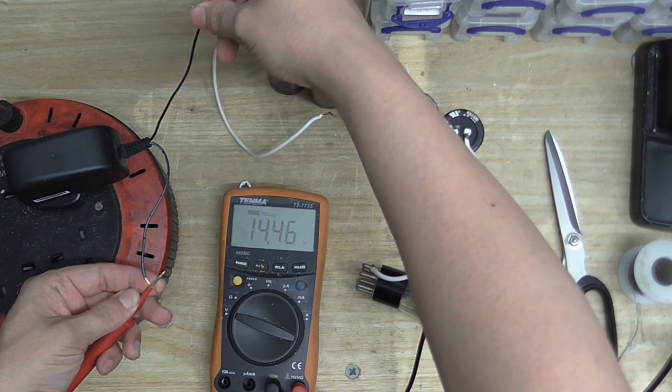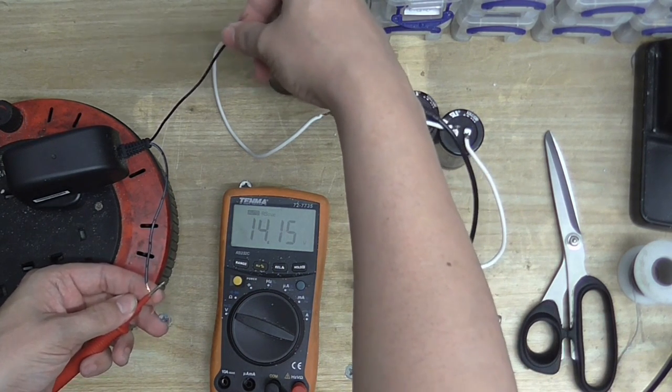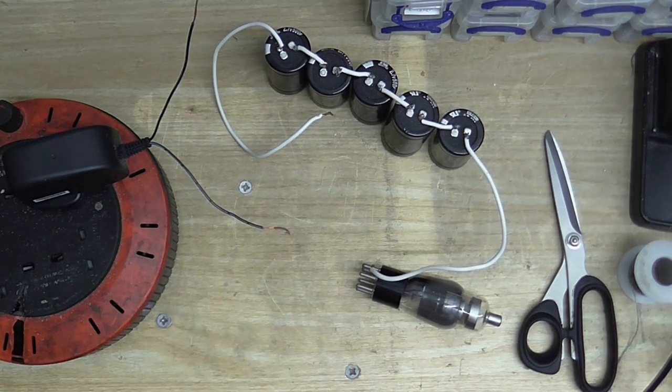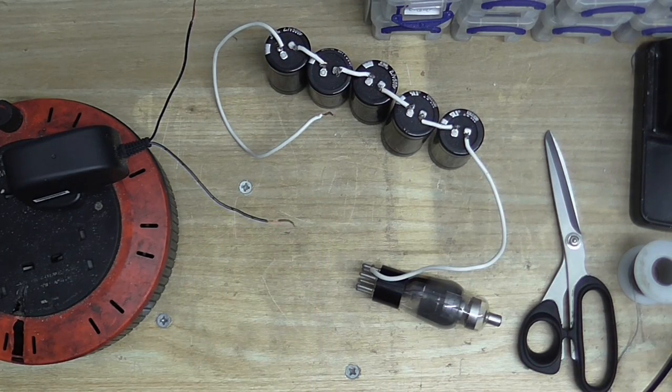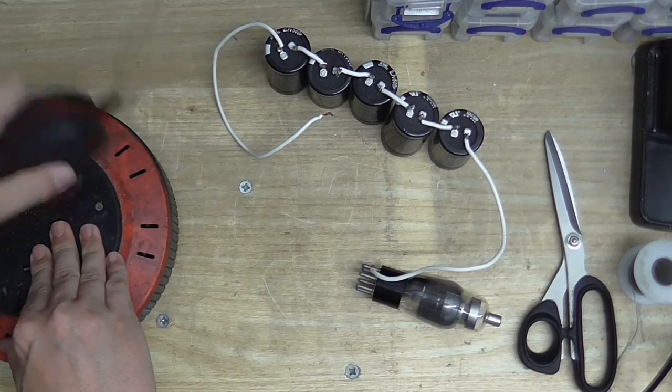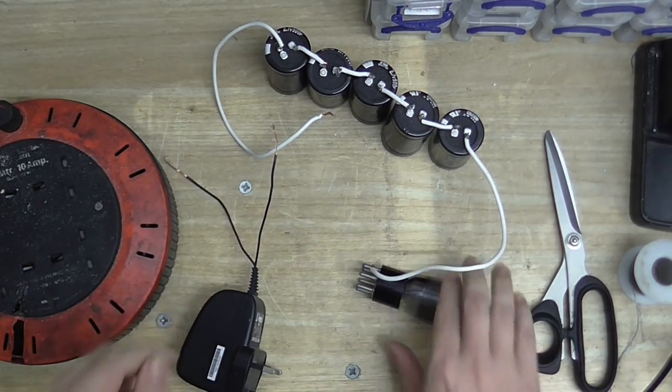Okay, so the striped wire is the positive. This is giving out a little bit more voltage than it says it does. It says that's a 12V supply and that's actually giving 14V, so I'll have to keep an eye on things while I'm charging these.